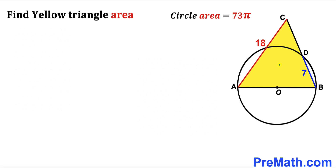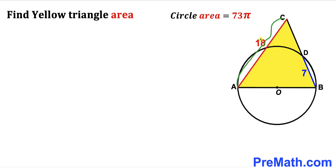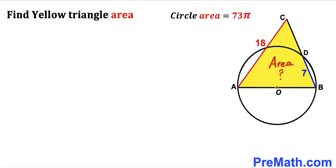Welcome to pre-math. In this video we have a yellow triangle ABC and a circle with center O, such that one side of the triangle is the same as the diameter of the circle. The secant length AC is 18 units, chord BD is 7 units, and the area of the circle is 73π square units. Our task is to calculate the area of the yellow shaded triangle ABC.